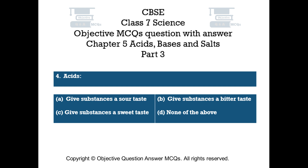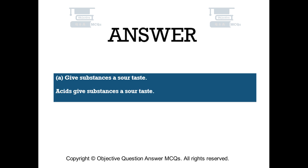Question number 4: Acids — Option A: give substances a sour taste. Option B: give substances a bitter taste. Option C: give substances a sweet taste. Option D: none of the above. The right answer is option A — give substances a sour taste. Acids give substances a sour taste.